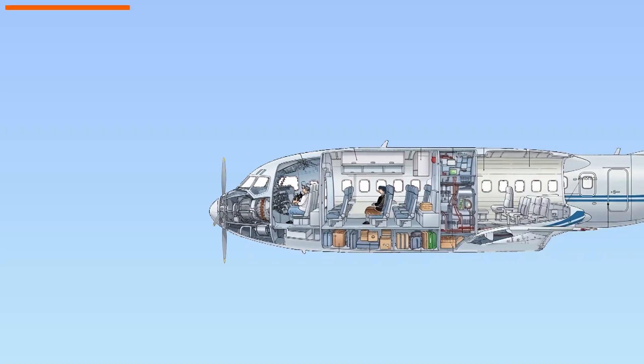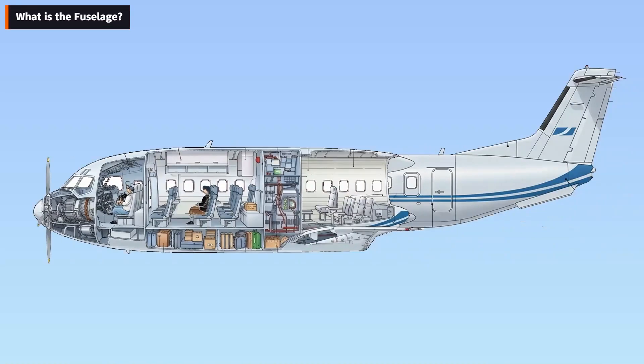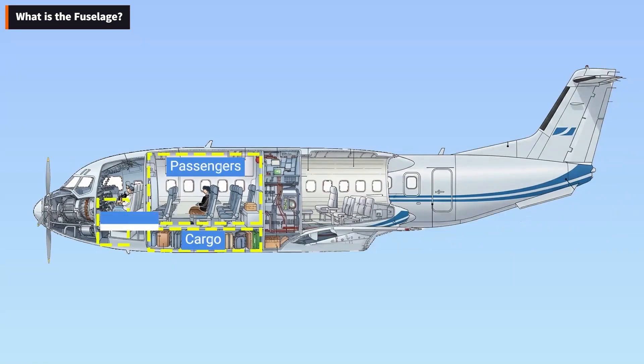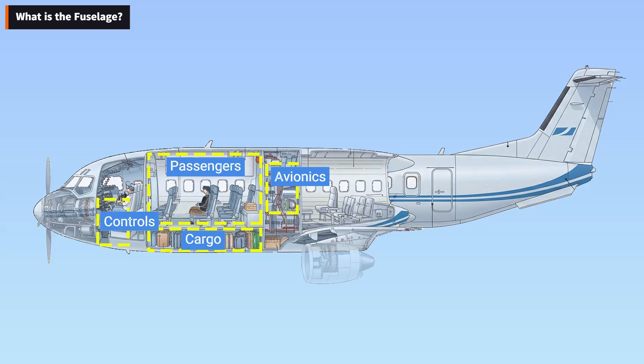The fuselage is the main body of the airplane. It provides space for passengers, cargo, controls, avionics, and accessories. In single-engine aircraft it also houses the power plant, while in multi-engine aircraft the engines may be located inside the fuselage, mounted to it, or suspended from the wings.